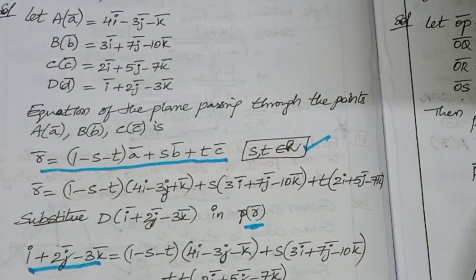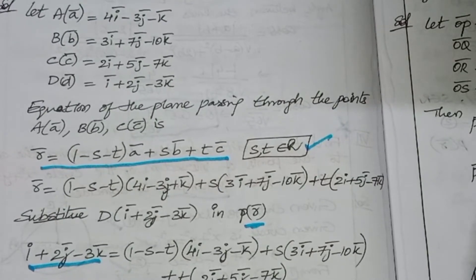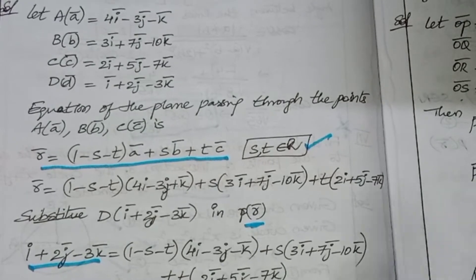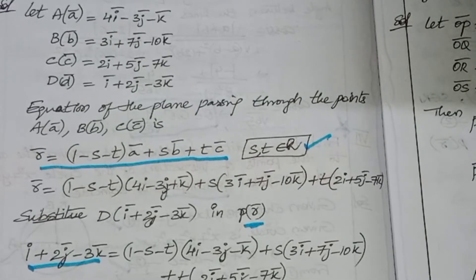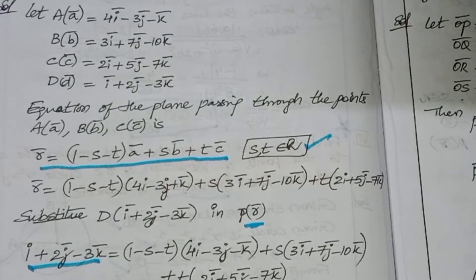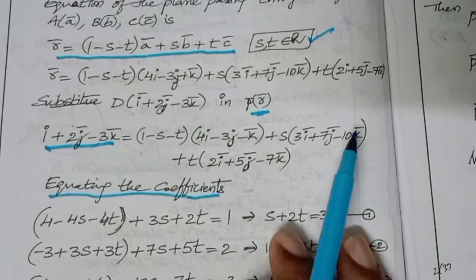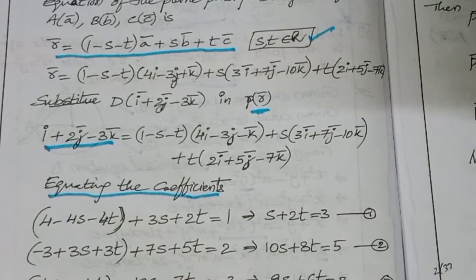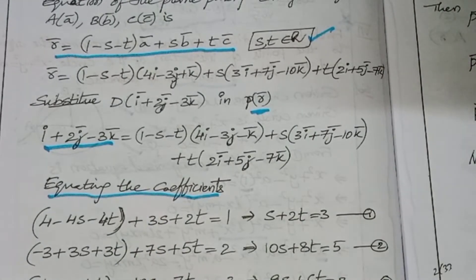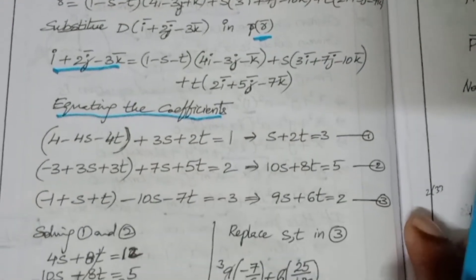Equating the coefficients: equating i coefficients gives equation 1. Equating j coefficients: minus 3 plus 3s plus 7s plus 3t plus 5t = 2, giving 10s plus 8t = 5. Equating k coefficients: minus 1 plus s plus t minus 10s minus 7t = minus 3, giving 9s plus 6t = 2.